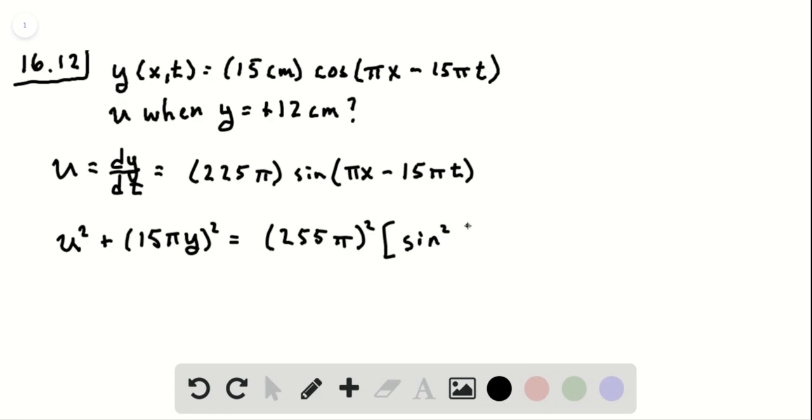Times sine squared of pi x minus 15 pi t, plus the cosine squared of pi x minus 15 pi t.